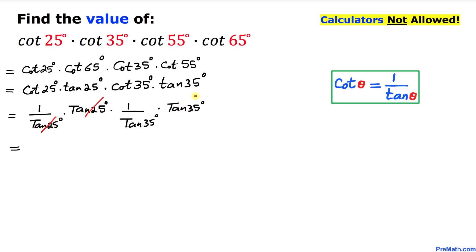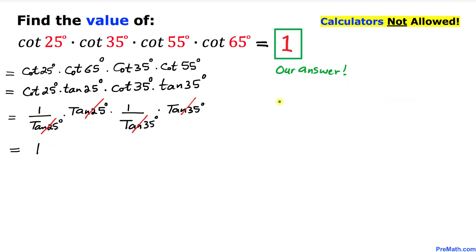We can see that tangent of 25 degrees cancels with 1 over tangent of 25 degrees, and tangent of 35 degrees cancels with 1 over tangent of 35 degrees. We are simply left with 1 times 1, which equals 1. So our answer is 1. Thanks for watching, and please don't forget to subscribe to my channel for more exciting videos!